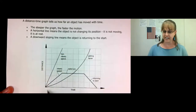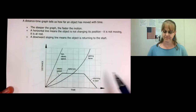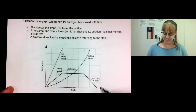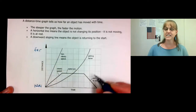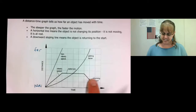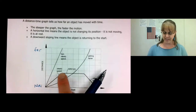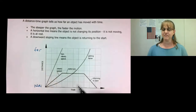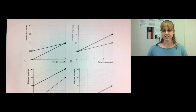A horizontal line means the object is not changing its distance or position — it's not getting farther, it's not getting nearer. So a horizontal line means not moving. A negative slope means the object is going from far to near — it is coming back to where you started. This slope is a little bit steeper than this slope, so the object is coming back a little bit faster than it went away. If you have a curved line that is getting steeper, then the object is getting faster.